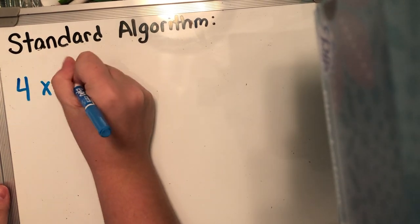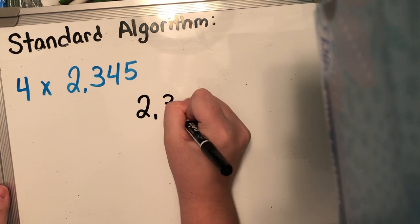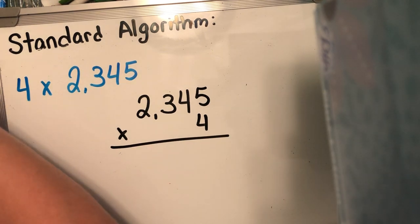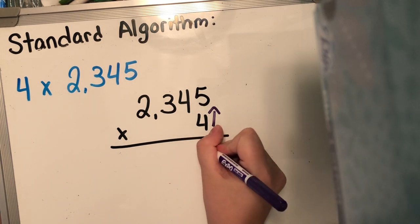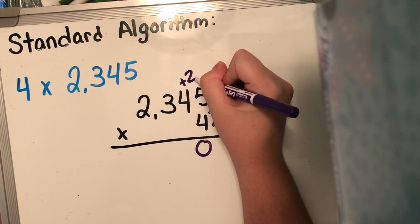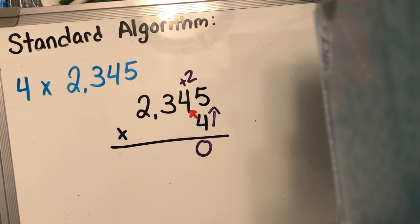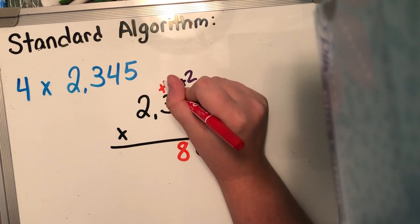So the next problem that we are gonna do is four times 2,345. I'm gonna go ahead and rewrite it so that way I have room. If I need to carry over and do some math, I'm gonna have all the room I need. Same thing — if you need to draw arrows, go for it. So four times five is 20. I'm gonna put that zero down and carry that two to the next place value. Then I'm gonna go across to the tens. So four times 40 — I know four times four is 16 — tack on that additional zero, so it's gonna be 160. Plus the additional two is gonna give me 180. I'm gonna write down that eight and carry that one.